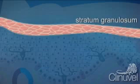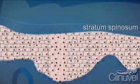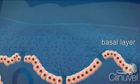The stratum granulosum consists of cells which have lost their nucleus. The stratum spinosum is the thickest layer of the epidermis; these cells are also called squamous cells. The basal layer is a single cell layer and the deepest of the epidermis, which sits just on top of the dermis.